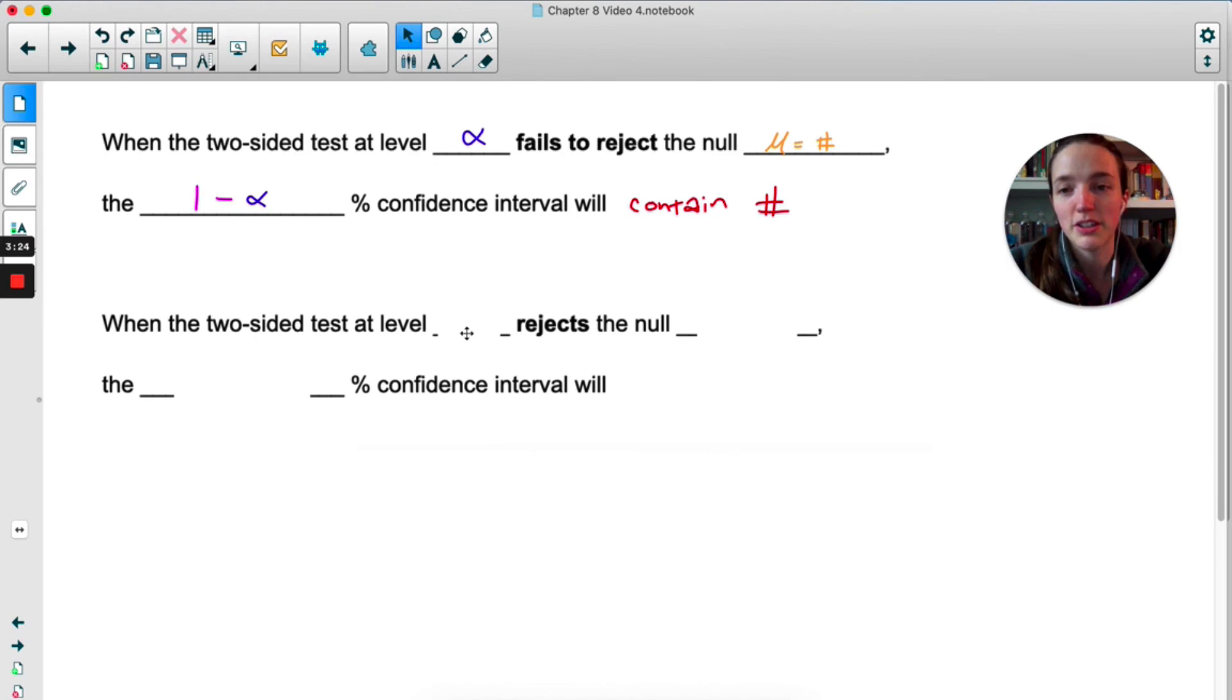And then the reverse of that is true as well. When the two-sided test at the significance level alpha rejects the null, same thing, mu equals a number, then the 1 minus alpha confidence interval will not contain the number. So if we did that exact problem again, but let's just say that we concluded we do have enough evidence to reject the null and conclude that the mean is different than 29.5, 29.5 would not be in our interval if we were to make a confidence interval.